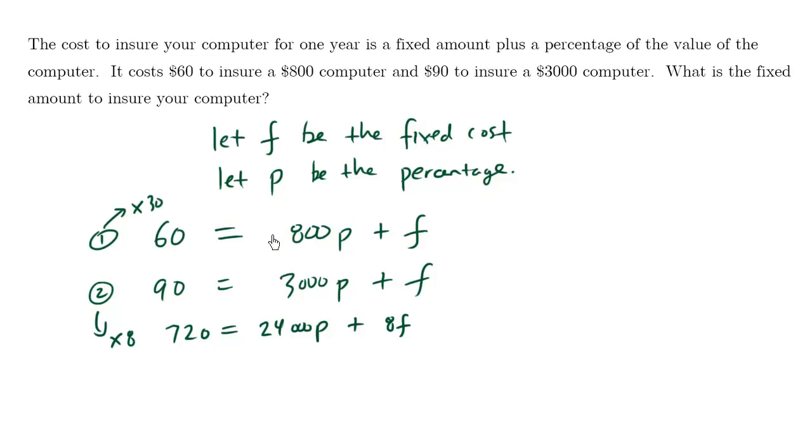So what we end up getting is 60 times 30 is 1,800 equals 800 times 30 is 24,000, which is what I wanted to eliminate the P's, plus 30F.